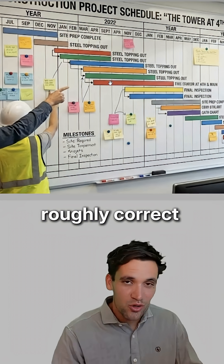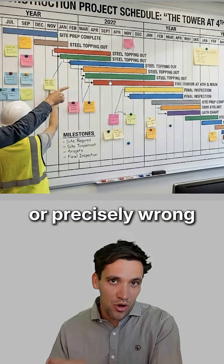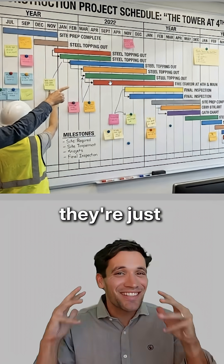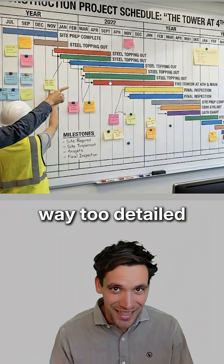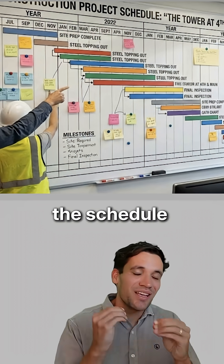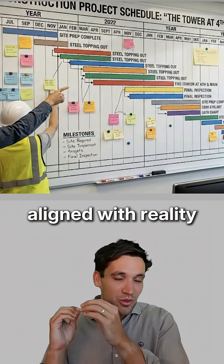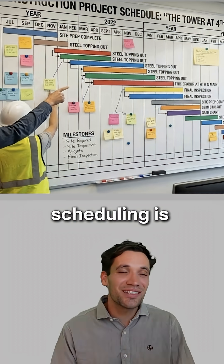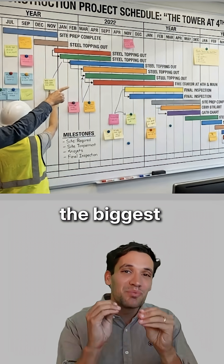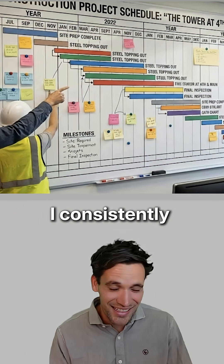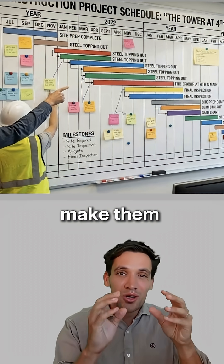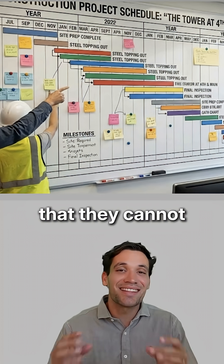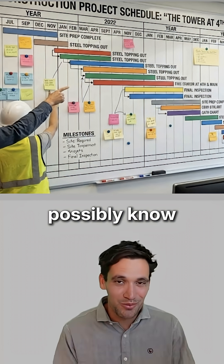Would you rather be roughly correct or precisely wrong? The biggest challenge I see with most construction schedules is they're just way too detailed. Every project I've worked on, the schedule has never aligned with reality — and this isn't meant to be a criticism. I understand scheduling is unbelievably complicated, but the biggest mistake I consistently see is people making them way too detailed and basing them on information they cannot possibly know.